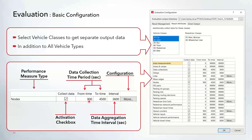In the bottom section all of the performance measures show up, allowing you to turn on data collection for each particular measure. You can also set the 'from time,' which is when Vissim starts collecting data — helpful for creating a warm-up period, for example allowing the simulation to run for 900 seconds before data collection begins. There's also a 'to time' for when collection stops, and an interval that determines how data is aggregated by time. By default the 'to time' and interval are set to a high value of 99999 to collect data for the entire simulation. You can also further configure smaller intervals and specific from/to times, and there's a 'more' button for additional configuration on select items.